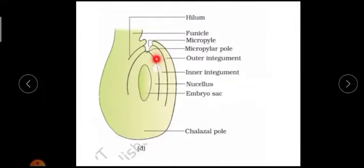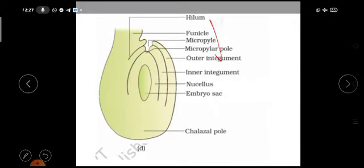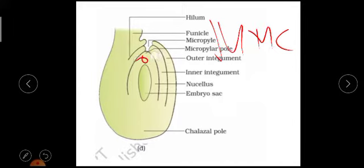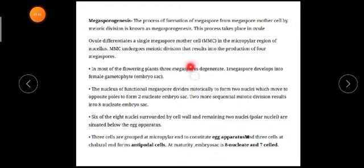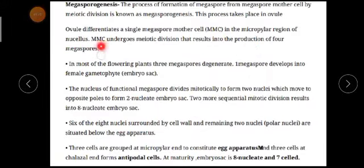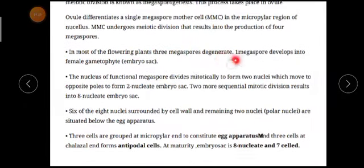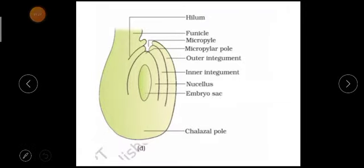In the micropylar portion, the megaspore mother cell or MMC will make four cells — four cells will be there in the megaspore mother cell region. The MMC undergoes meiotic division that results in the production of four megaspores. These small four cells are called megaspores, and in flowering plants, among those four megaspores, three megaspores will degenerate — three will disappear and only one will be left.